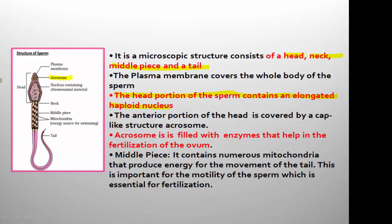The acrosome is filled with enzymes that help in the fertilization of the ovum. The ovum is surrounded by additional protective coverings, and those coverings are broken or lysed with the help of the enzymes of the acrosome at the time of fertilization. To summarize: the anterior portion of the sperm head is covered by a cap-like structure called the acrosome, which is filled with enzymes that help in the fertilization of the ovum.